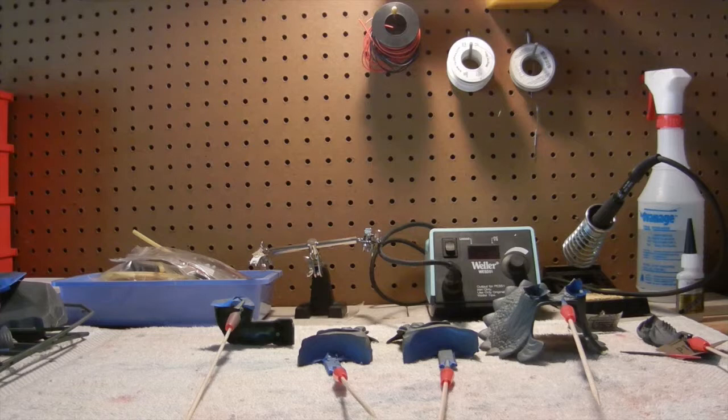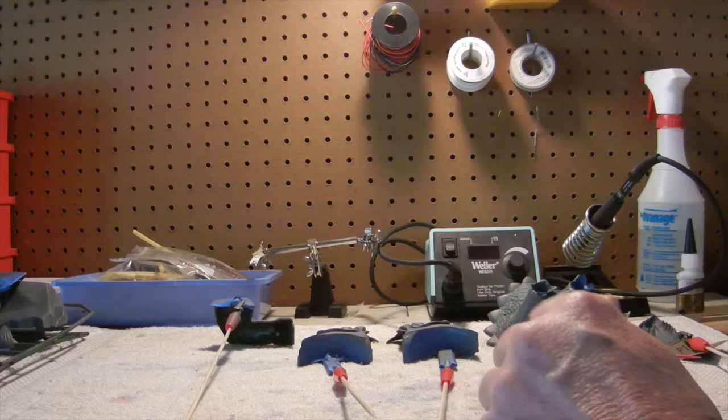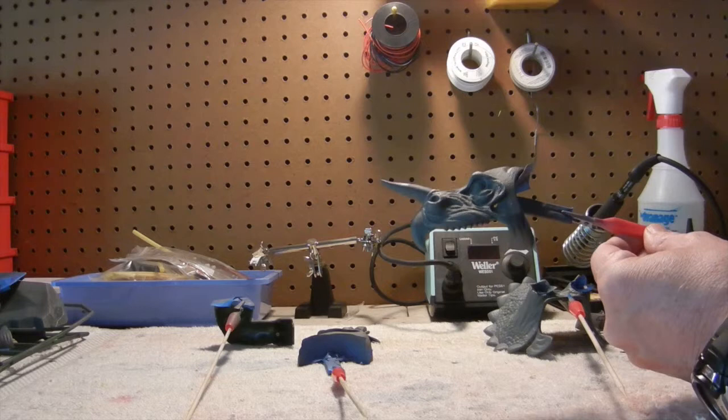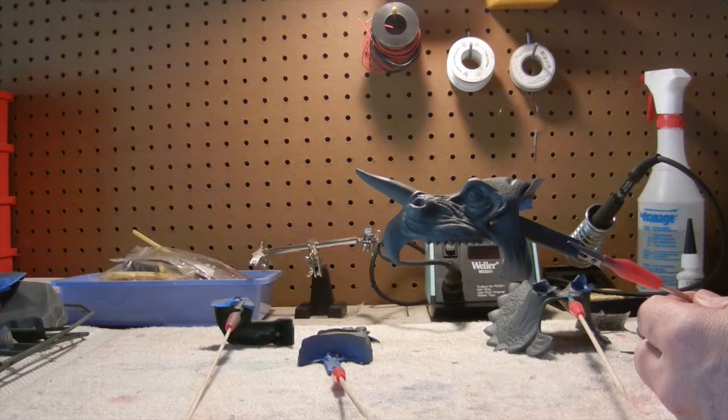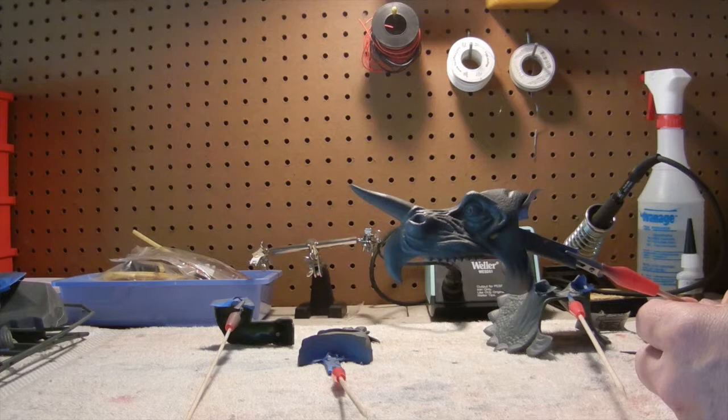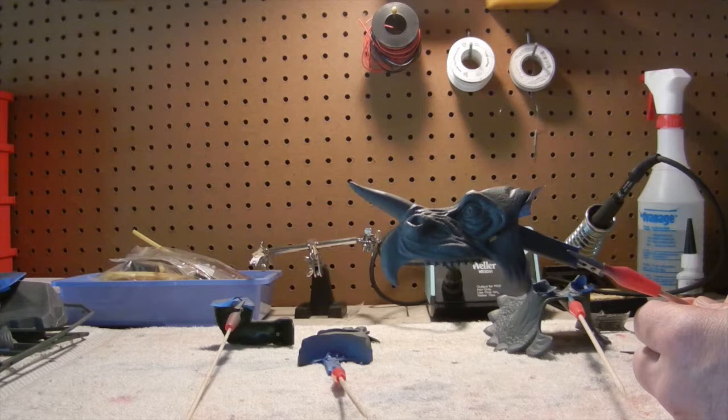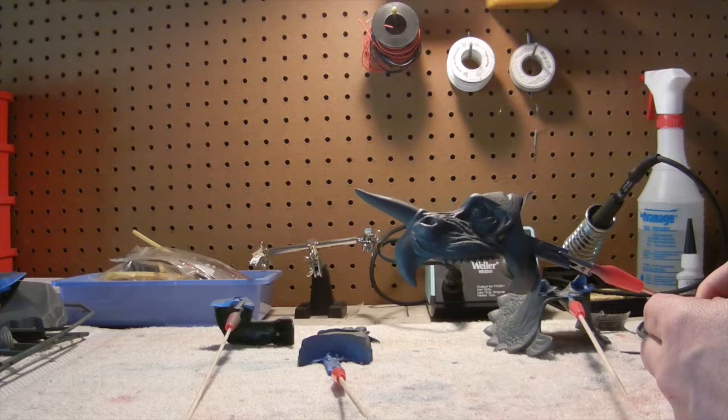First off, we'll go ahead with the actual face of Trike here. Hopefully I can get the light in here and focus with the camera. Priming it up like this really brings out the details in his face, from his eyes all the way to his snout, his teeth, and the horn that's coming out of his snout.